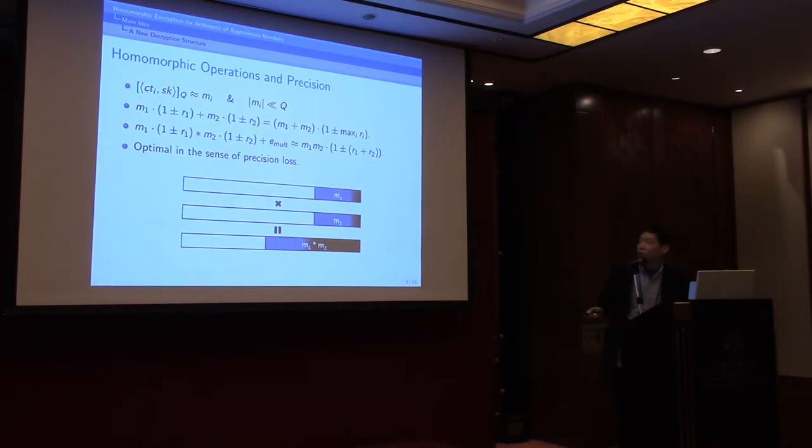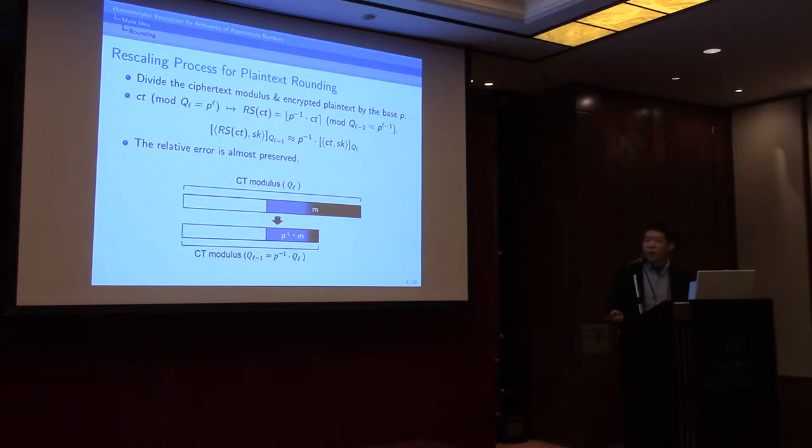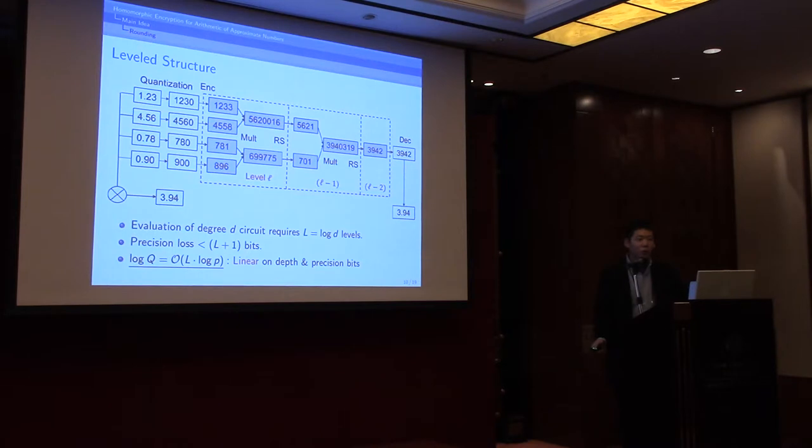But it's not enough because the size of plaintext will grow exponentially. The second idea is called rescaling process. The rounding operation is a key operation in floating point operation, so rescaling process does a similar thing on encrypted data. Technically, it's just dividing the ciphertext by p and rounding to the nearest integer. But inside the ciphertext, plaintext is together divided by p. So you can obtain an encryption of m divided by p from an encryption of m, while the ciphertext modulus is divided by p together. You'll have a kind of leveled structure form of encryption.